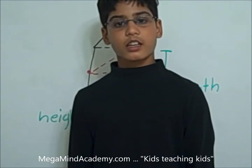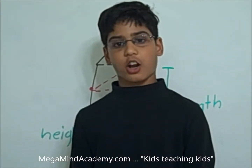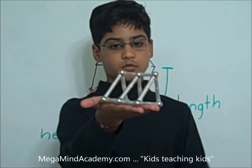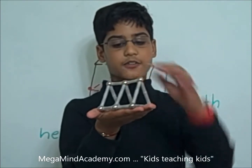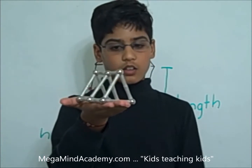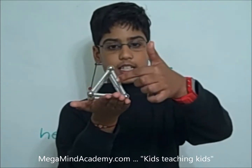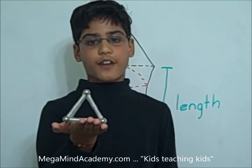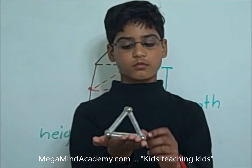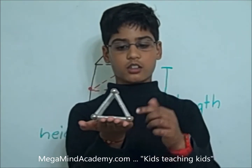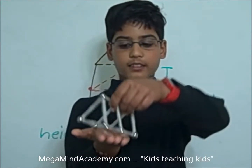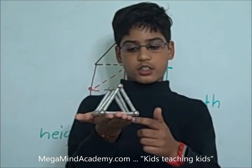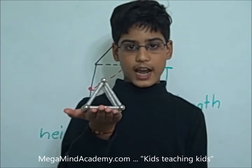Now let's learn about how many faces, vertices, and edges are on a triangular prism. Let's first find out how many faces are on it: one on this end, one on this end, and three on the sides — that makes it have five faces. Now let's see how many edges there are: one, two, three on this end; one, two, three on this end; and one, two, three on the sides — that makes it have nine edges.